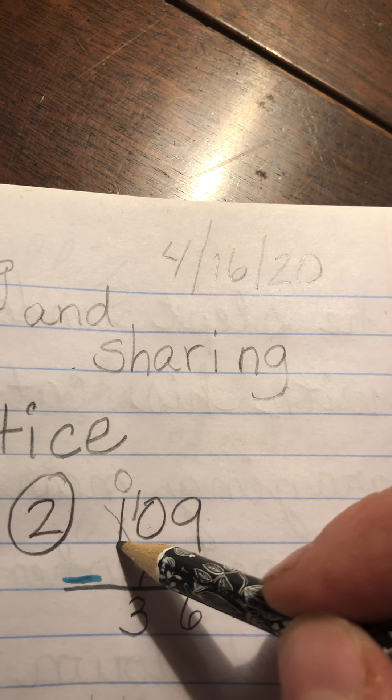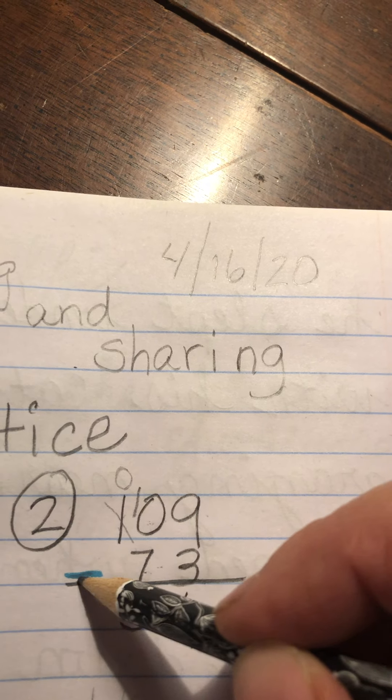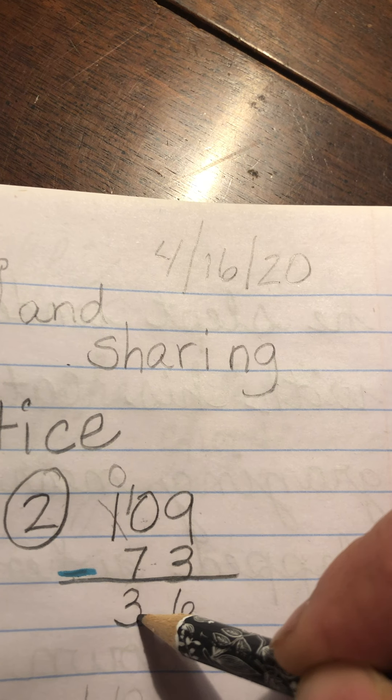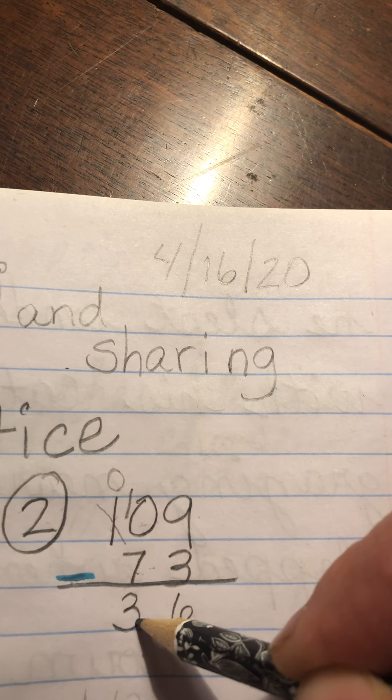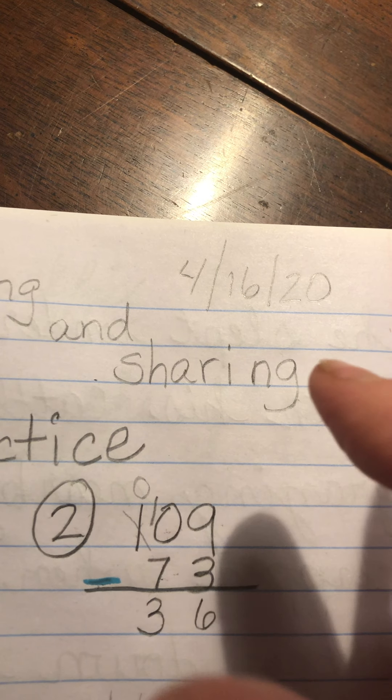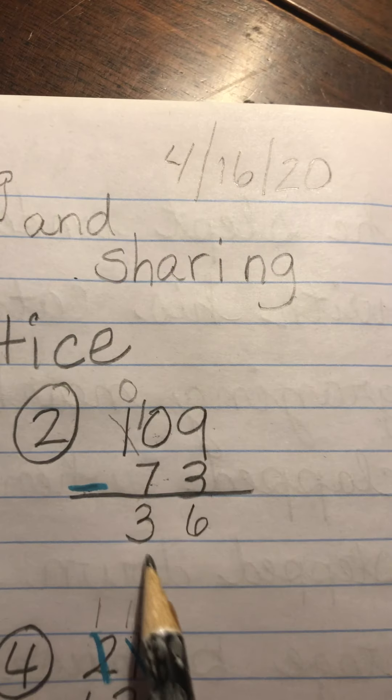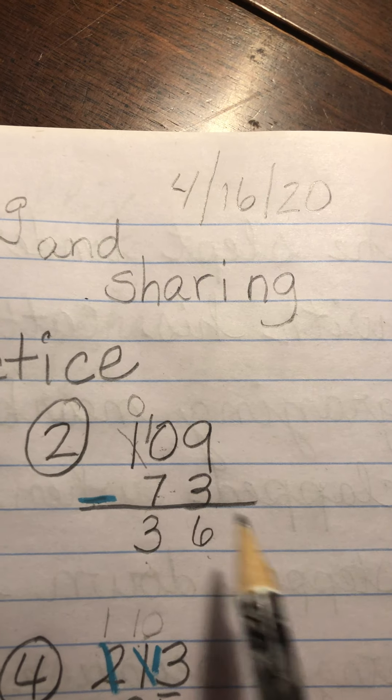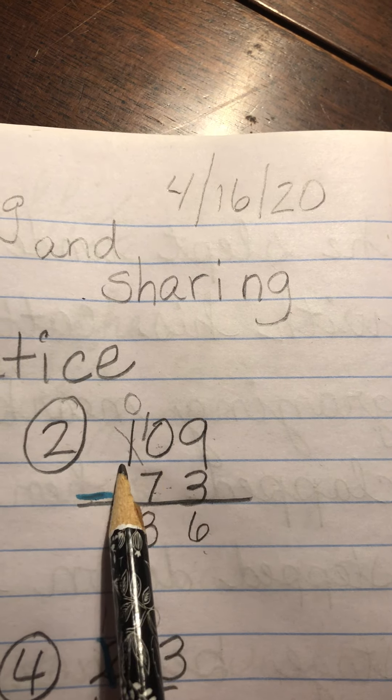This is still essentially 10 take away 7. And that's an easy enough problem to do, because we can leave our 10 fingers out and take away 3 and have 7. So 36 is what's left over when we take 73 from 109.